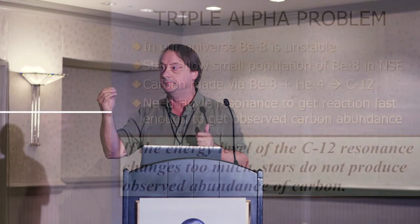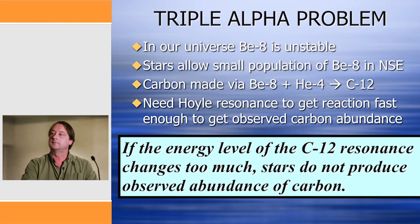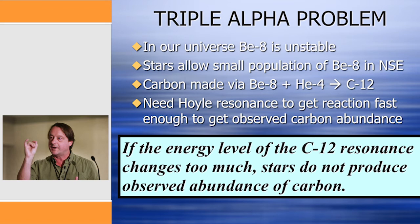So the way stars have to operate in our universe is: even though beryllium is unstable, at the end of stars' lives they're hot enough that they make a trace amount of beryllium. That trace beryllium population interacts with helium to make carbon. In order to get enough carbon to populate our universe, Sir Fred Hoyle famously said we need an enhanced reaction — a resonance. This special resonance allows stars in our universe to make lots of carbon, even though beryllium is unstable.